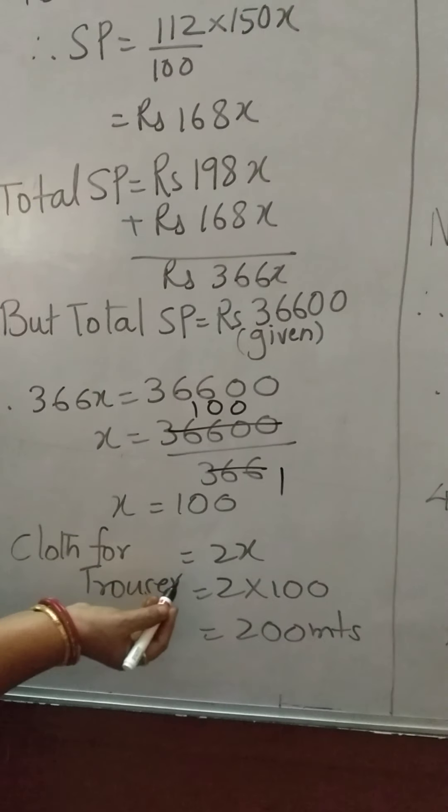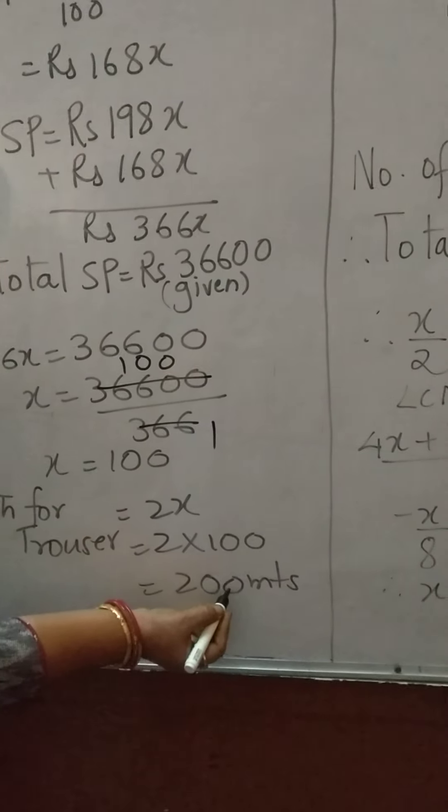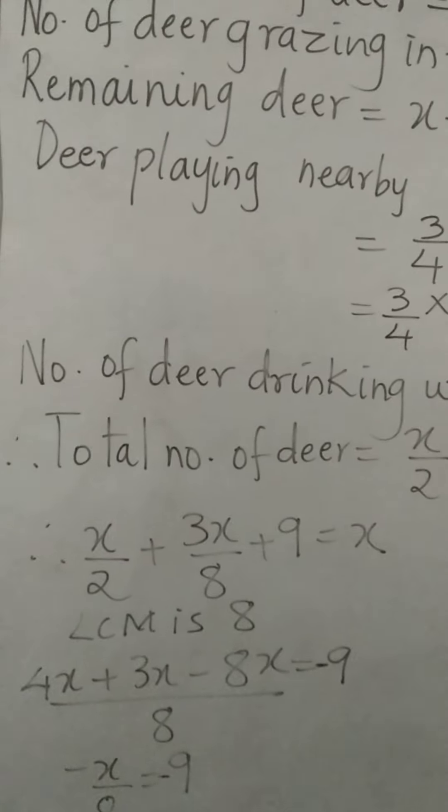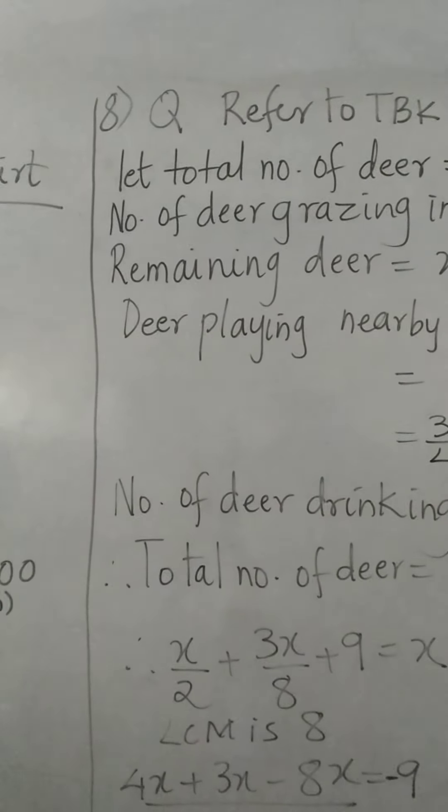So trouser's cloth will be 2x, 2 into 100 is 200 meters. Is it clear? Now question number 8, very interesting.